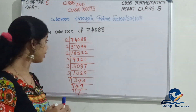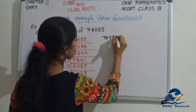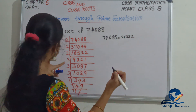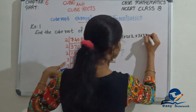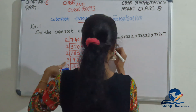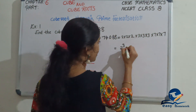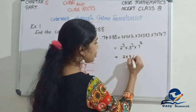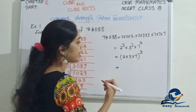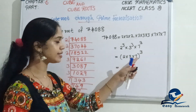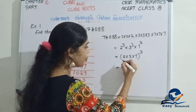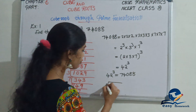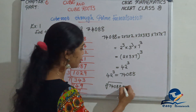Now we have the prime factorization complete. Grouping the prime factors: 2 times 2 times 2, then 3 times 3 times 3, then 7 times 7 times 7. That means 2 cubed times 3 cubed times 7 cubed. Taking one factor from each triplet: 2 times 3 times 7 equals 42. So 42 cubed is equal to 74,088, and the cube root of 74,088 is equal to 42.